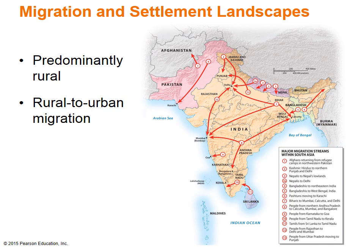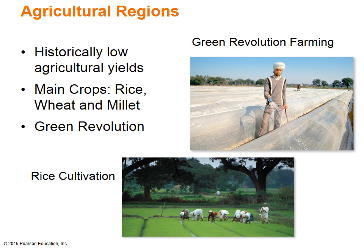South Asia is one of the least urbanized regions in the world, yet people are beginning to move into cities at a more rapid pace, so rural-to-urban migration has been on the rise. The main agricultural outputs in this region are rice, wheat, and millet.